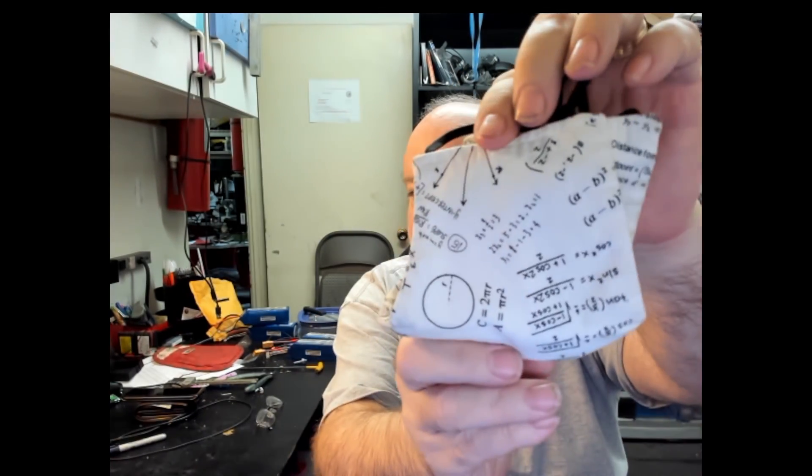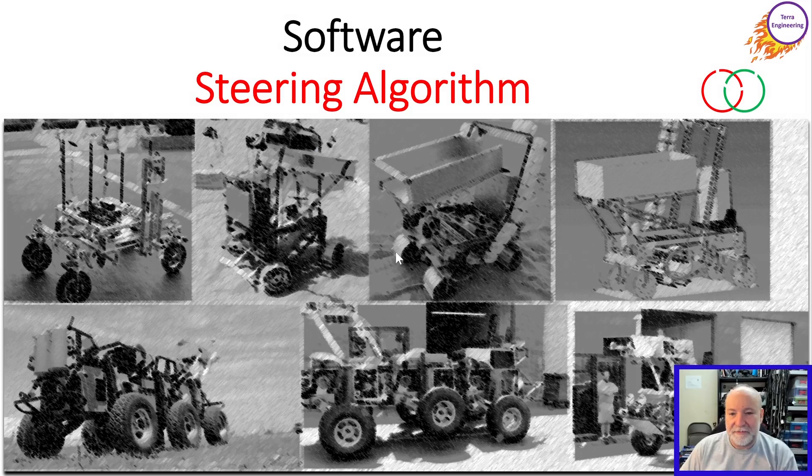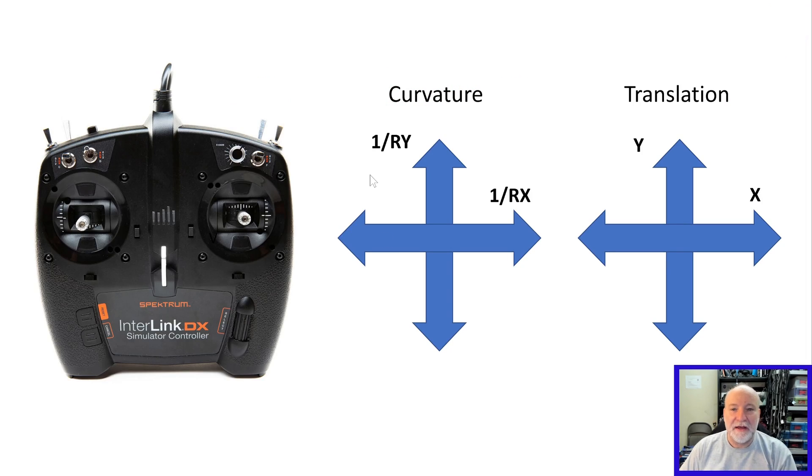Math. More math. Okay. We start here with the representation of what we're trying to do on the controller. This is the DX controller, the Spectrum DX, and it's a USB controller. Two sticks.